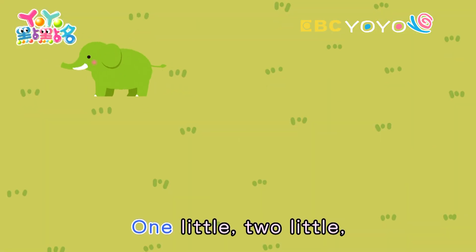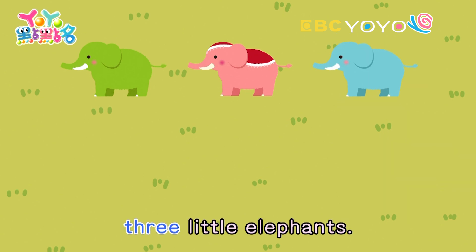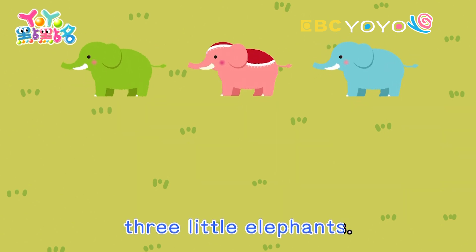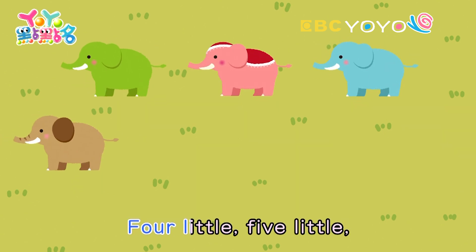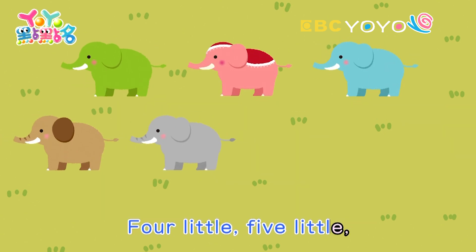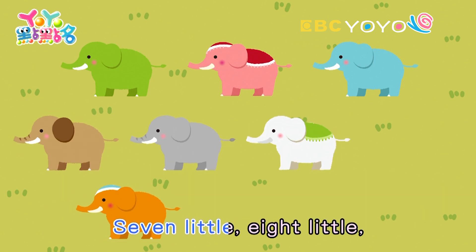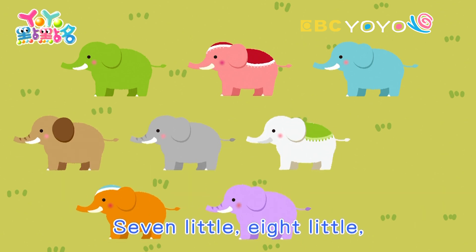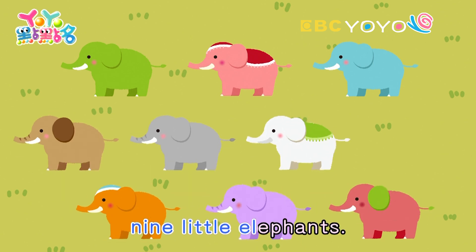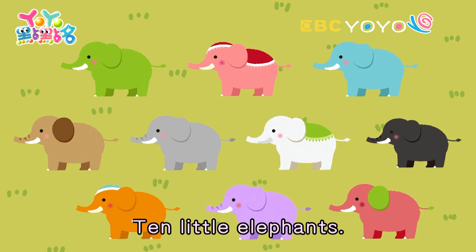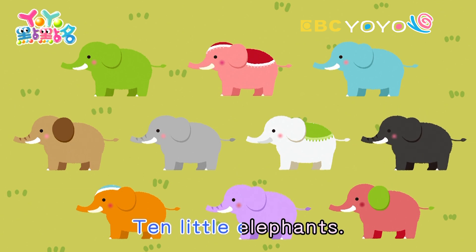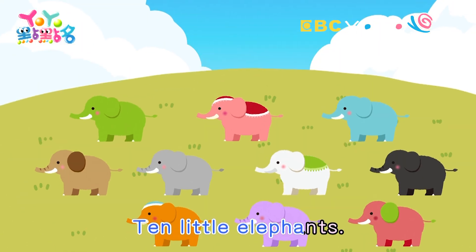One little, two little, three little elephants. Four little, five little, six little elephants. Seven little, eight little, nine little elephants. Ten little elephants.